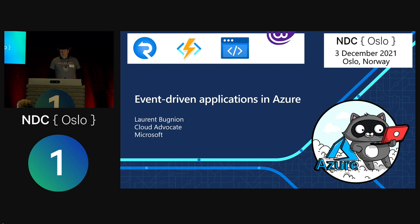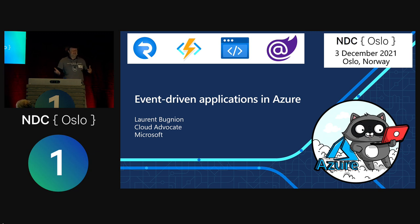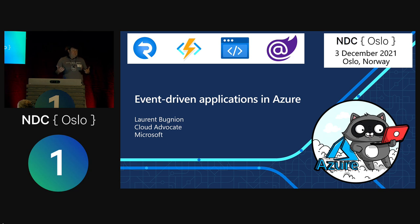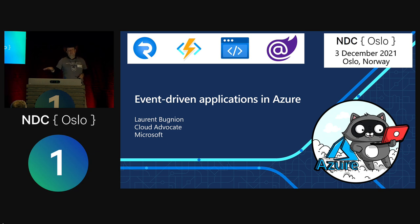Today we're going to talk about event-driven applications in Azure, specifically SignalR. There are other ways to do event-driven apps in Azure — you may have heard about PubSub. SignalR and PubSub fulfill similar needs with some differences. SignalR is awesome, especially with its client SDKs in JavaScript, .NET, and other languages. The demo today is in JavaScript, though I'm more of a .NET guy. I'll also show a Blazor example at the end.